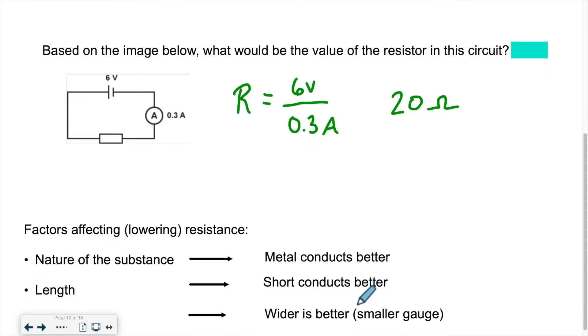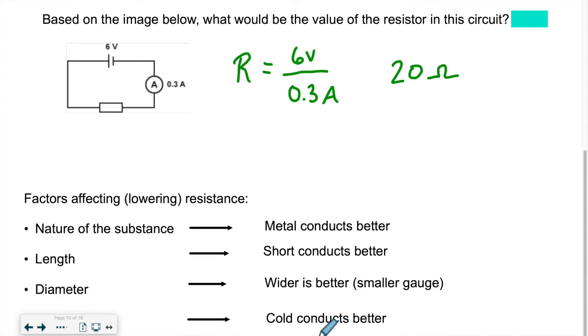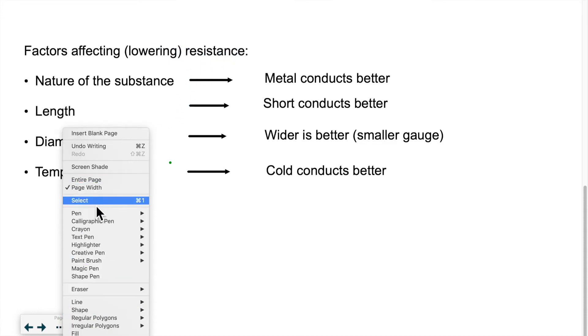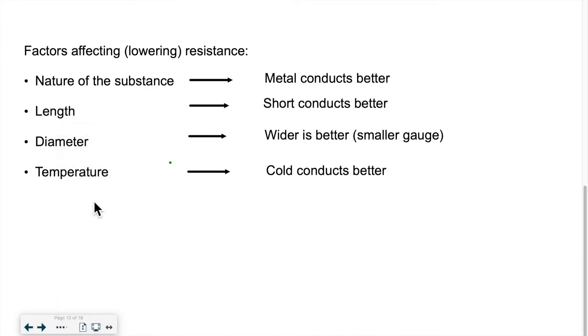Now, what can change the value of the resistance? What can help a system resist more or resist less, depending on what you're trying to achieve? Well, the factors that are lowering the resistance, in other words, what is helping current to flow? The nature of the substance, first of all, you want something that conducts well. Metals are the types of substances that conduct the best. The best metal of all is copper. That's why we use copper wiring in homes, because it's the best metallic conductor.